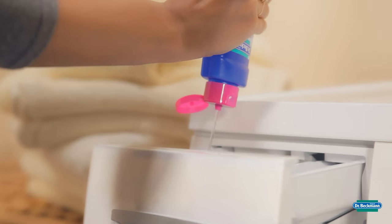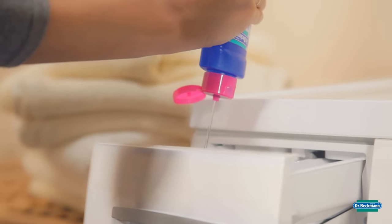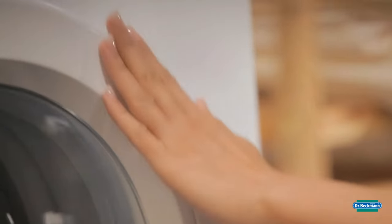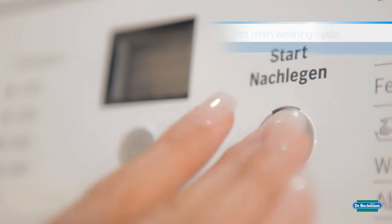Pour the rest of the liquid into the clean drawer and start the main wash cycle at minimum 60 degrees, without detergent and without laundry.